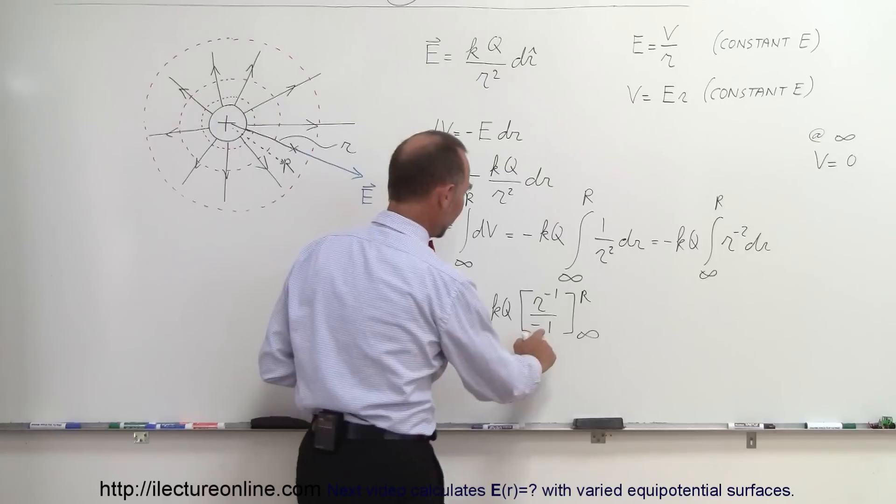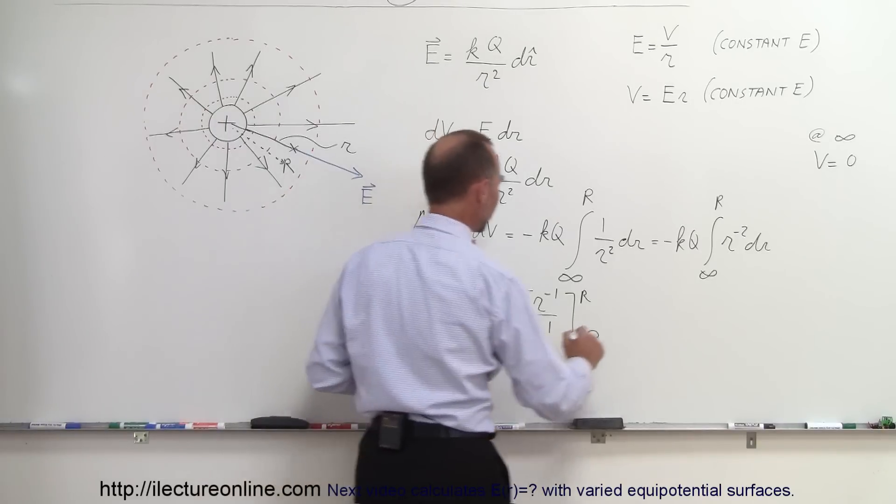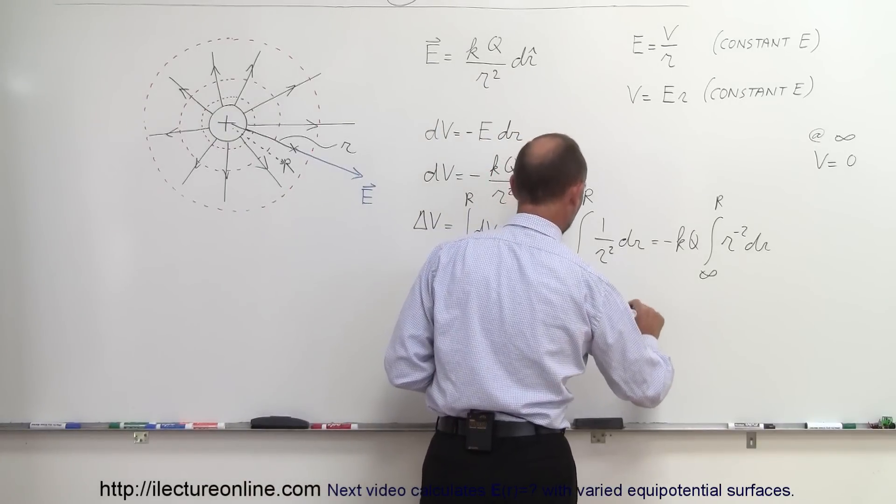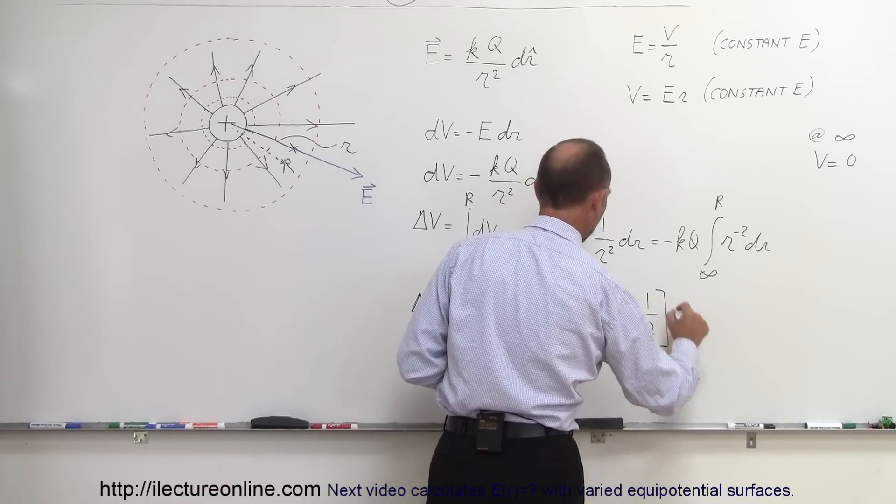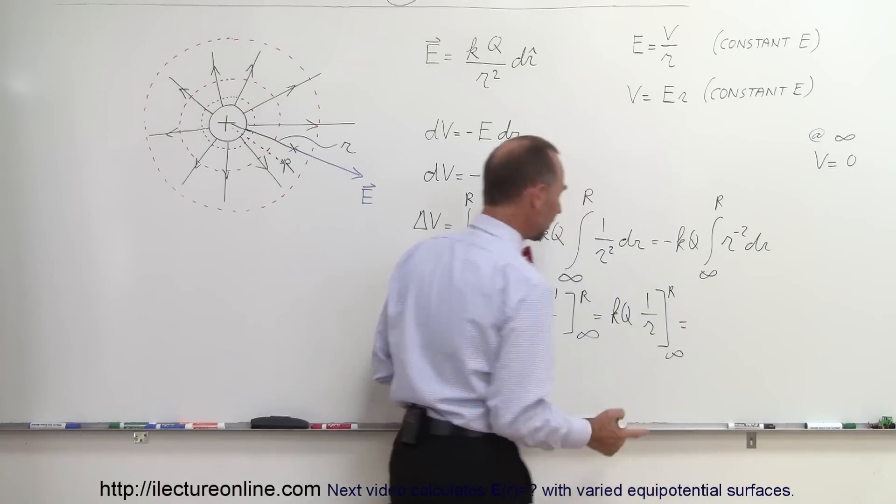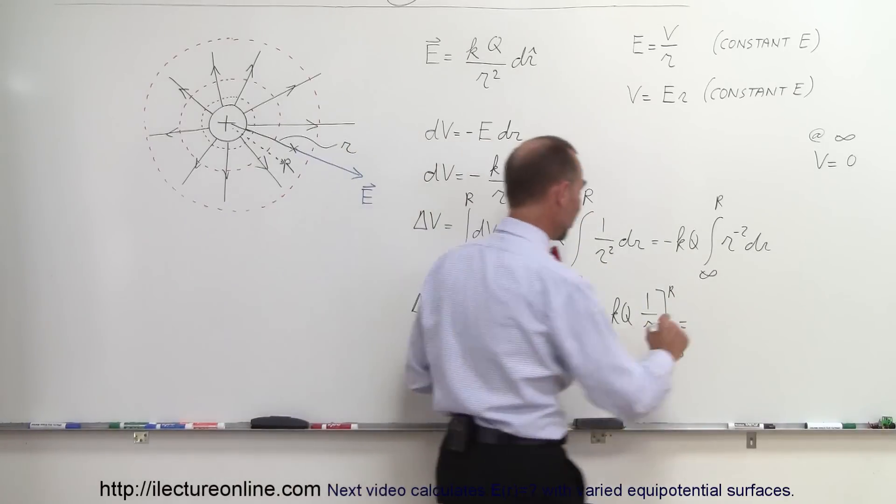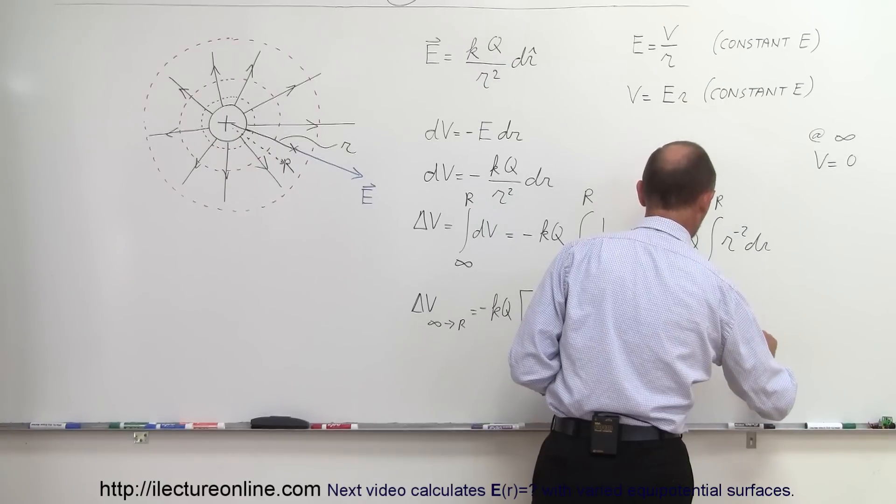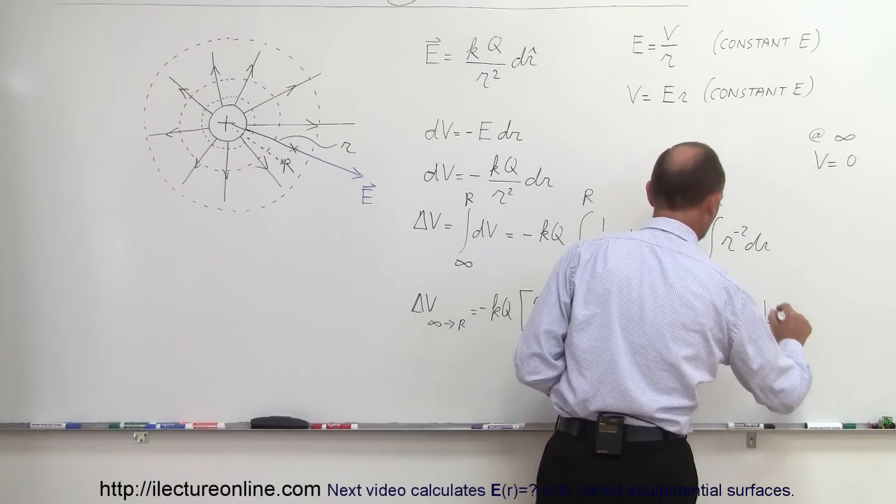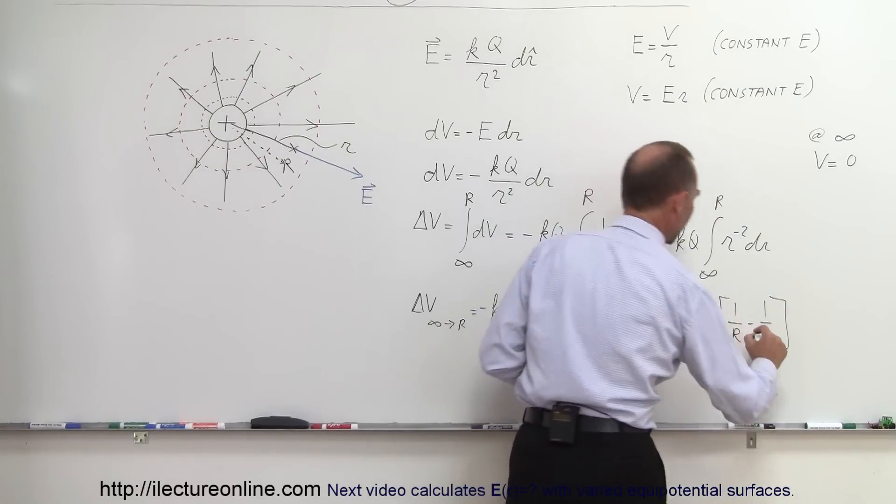Let's simplify that. This minus can cancel out that minus, so we end up with KQ and one over R evaluated from infinity to R. When we plug in the upper limit we get the following result: this would be equal to K times Q, one over R minus one over the lower limit infinity, and of course one over infinity is equal to zero.